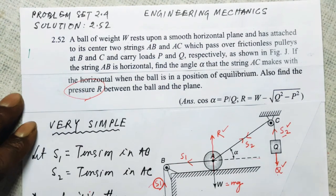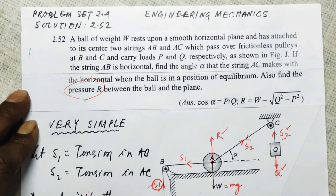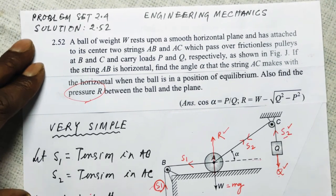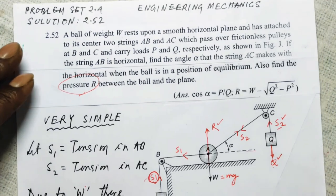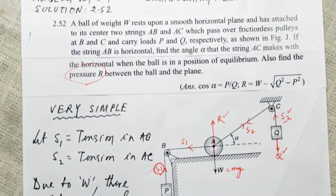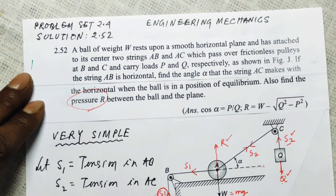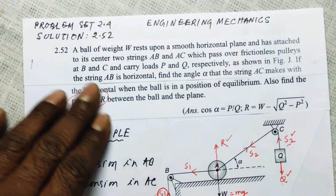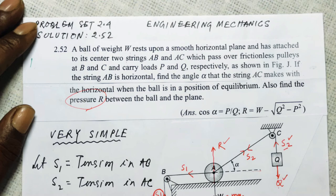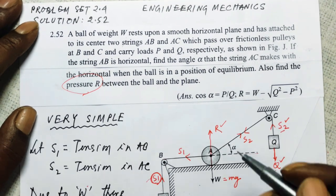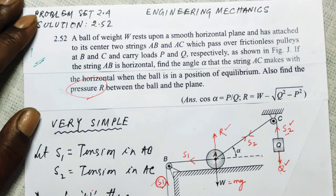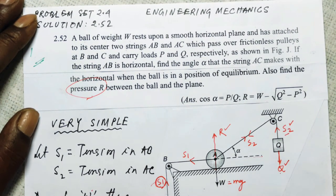Okay dear students, let me come back and begin with another numerical problem. Engineering mechanics problem set 2.4, solution to 2.52. Don't look at the red parts — the video went wrong so I have to explain it again with green ink. Don't look at the red part for the time being; I will explain it once again with this green ink.